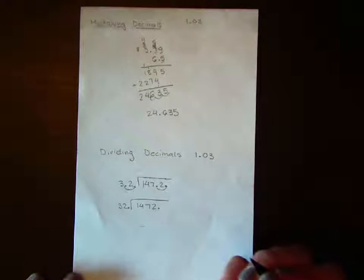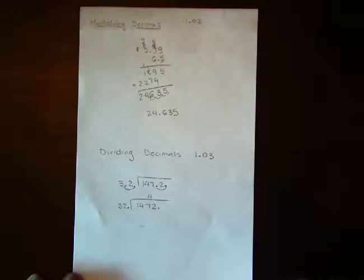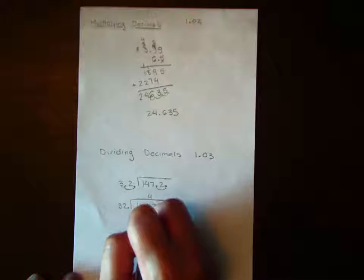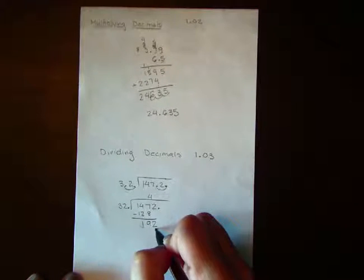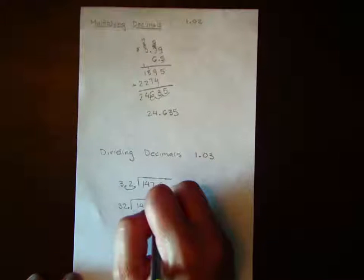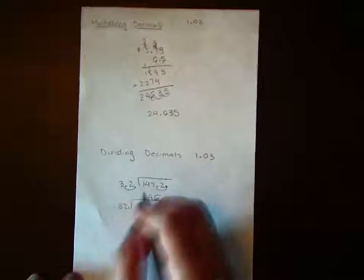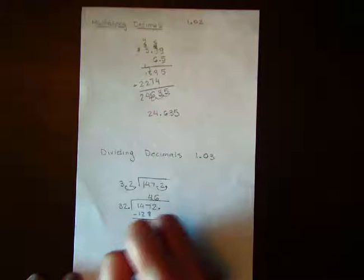So 32 goes into 147 four times. Four times 32 is 128. We would subtract, that is 19, bring down your 2. 32 goes into 192 six times. Six times 32 is 192. When we subtract, we have 0.